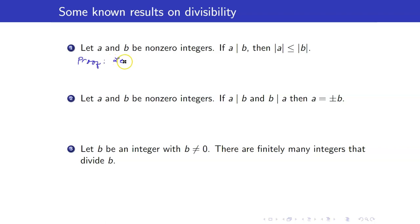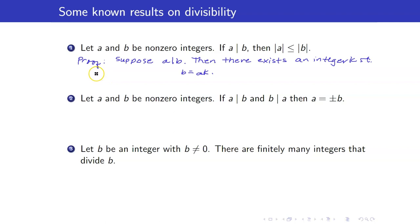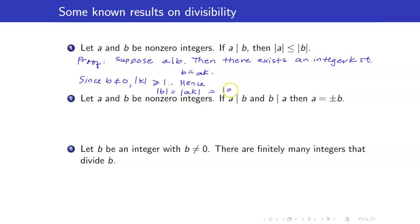Let us prove this. We start with the premise that a divides b. Then there exists an integer k such that b is equal to ak. Since b is not equal to zero, k must be non-zero. Therefore, its absolute value is greater than or equal to 1. Hence, if we take the absolute value of the equation, we get that |b| = |ak| = |a|·|k|, and this is greater than or equal to |a| because |k| ≥ 1.